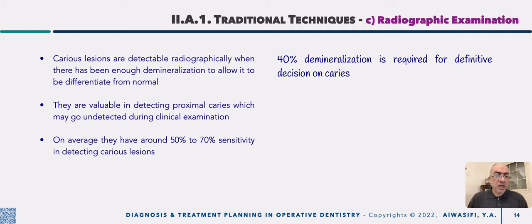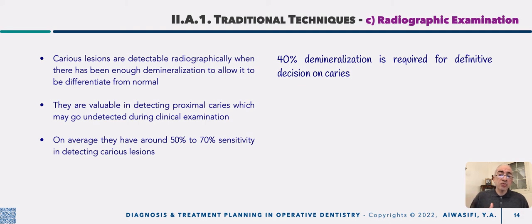Caries lesions are detectable radiographically, but you still need a sufficient degree of demineralization to allow differentiation from normal tooth structure. This is our main challenge — to modify radiographic techniques to enable detection of early caries lesions at an early demineralization stage.